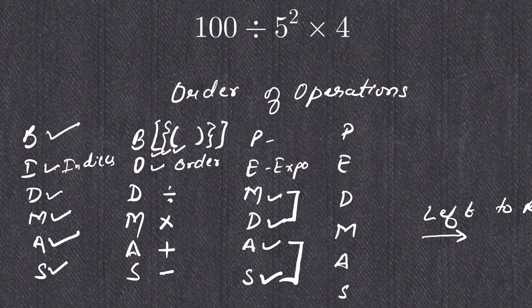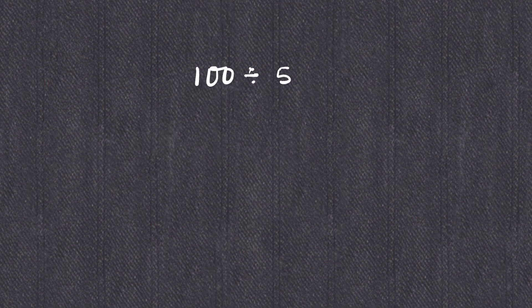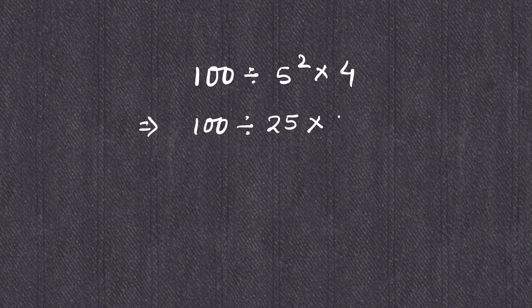However, while solving multiplication, division, addition, and subtraction, we solve from left to right — whichever comes first. Now in this question, hundred divided by five squared multiplied by four, we have to do the exponent part first. So five squared equals twenty-five, giving us hundred divided by twenty-five multiplied by four.